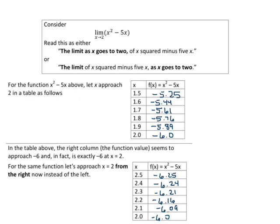So now for the function x squared minus 5x above, let x approach 2 in a table as follows. We're going to be looking at limits first using tables. Now you want to fill this in, and the way that I obtain these values here for f of x is by simply plugging this into my calculator. I use the function and keyed in values for x and it gave me the output.